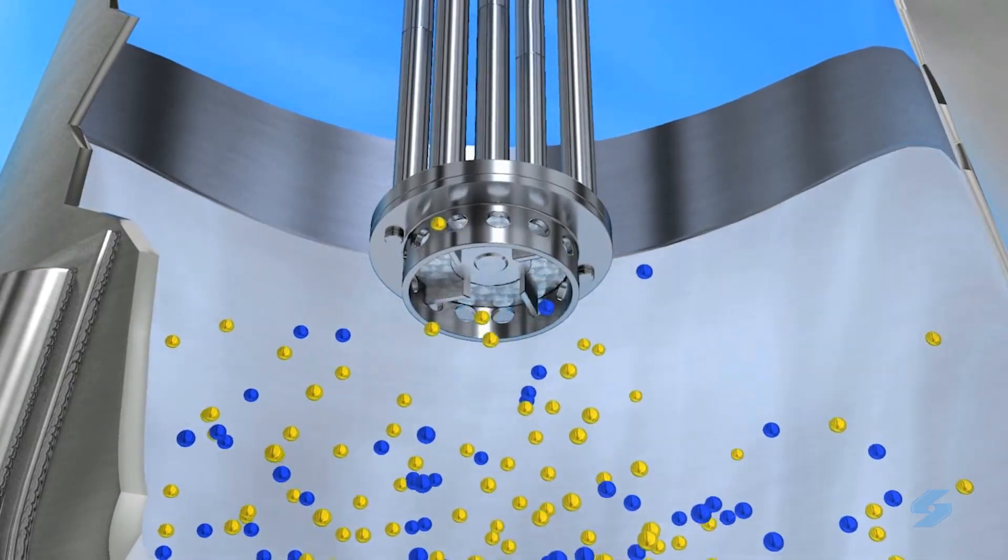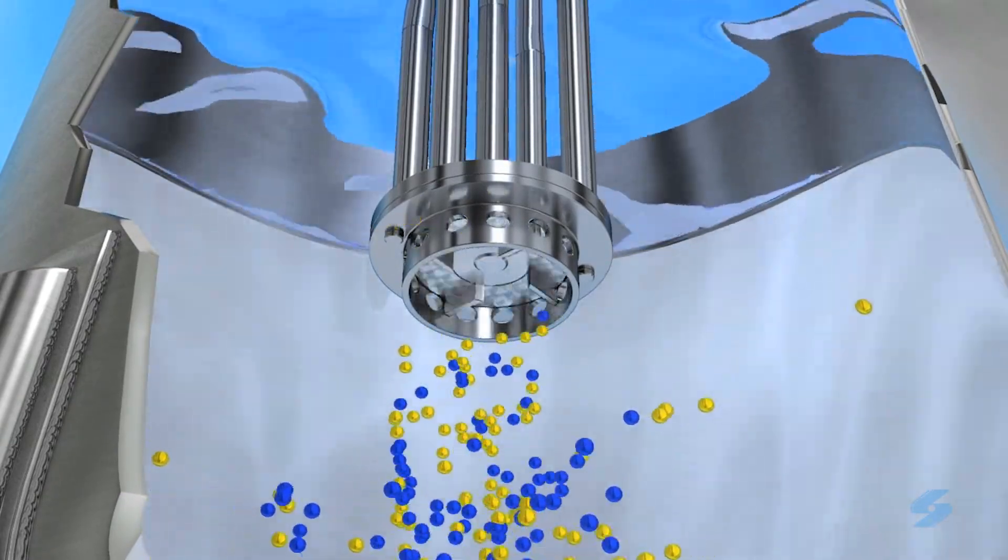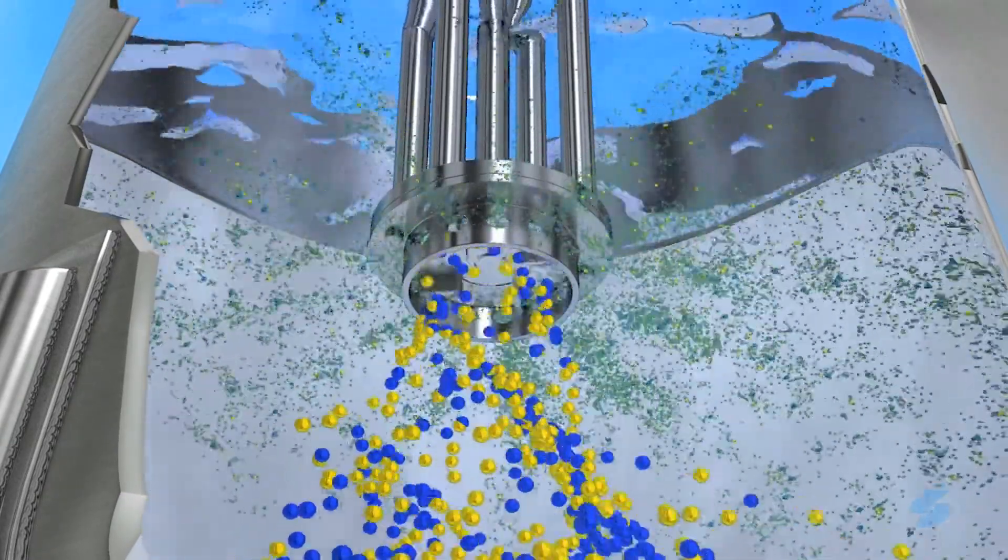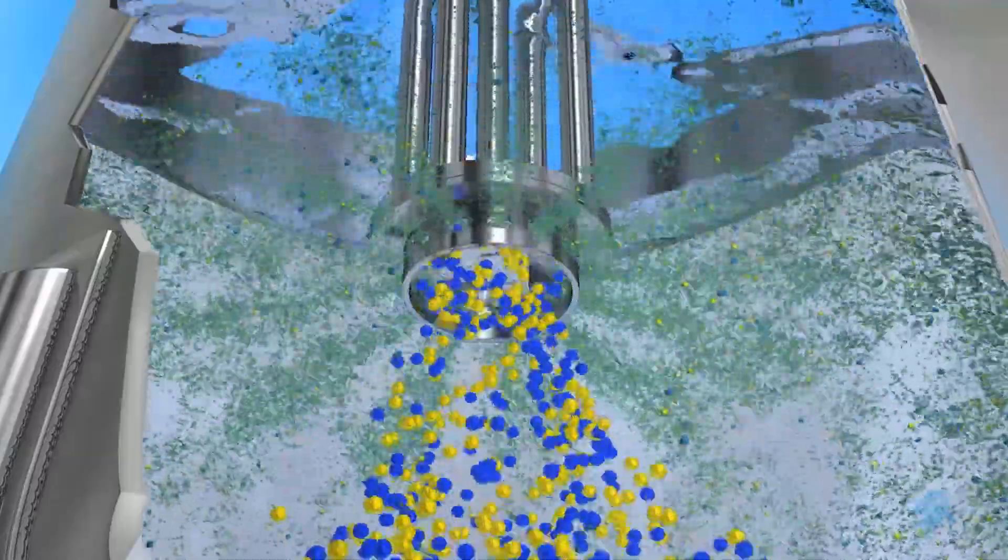How is the high-shear mixer able to do this? The high-speed rotation of the rotor exerts a powerful suction, drawing liquid and solid materials upwards into the workhead. Centrifugal force then drives the materials towards the periphery of the workhead, where they are rapidly milled between the rotor blades and the stator.